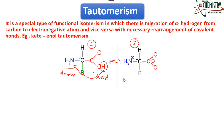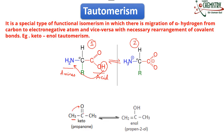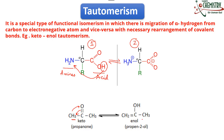Another example to understand tautomerism: this one is a ketone, also called the keto form. If we transfer one hydrogen to the oxygen, we get a compound that is no longer a ketone — we now have an alcoholic OH group and a double bond. The double bond has shifted from C=O to C=C because of the hydrogen migration. This form is called the enol form. Both keto and enol are forms of the same compound existing under different conditions — these are tautomers.